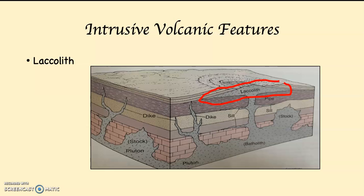Finally, a lacolith. A lacolith is a bloated sill that forms a hill at the surface. If you look at the sills below what I've circled as the lacolith, you can see that if you continue to fill those up with magma, the lacolith would slowly lift up the layers of sedimentary strata, and that would cause a hill to form. When it cools and solidifies, that creates a lacolith.